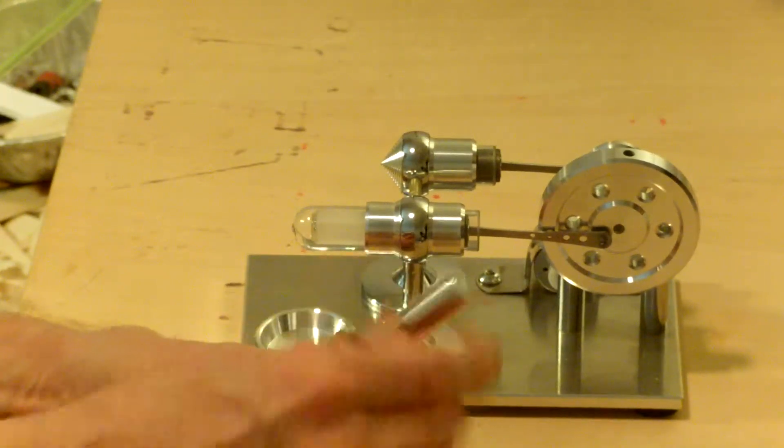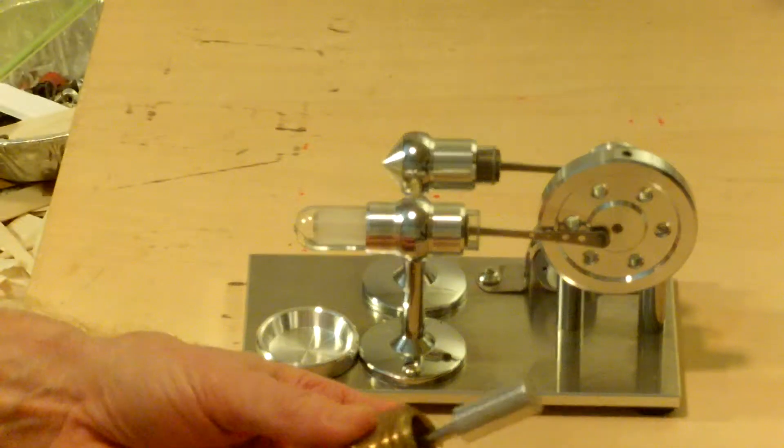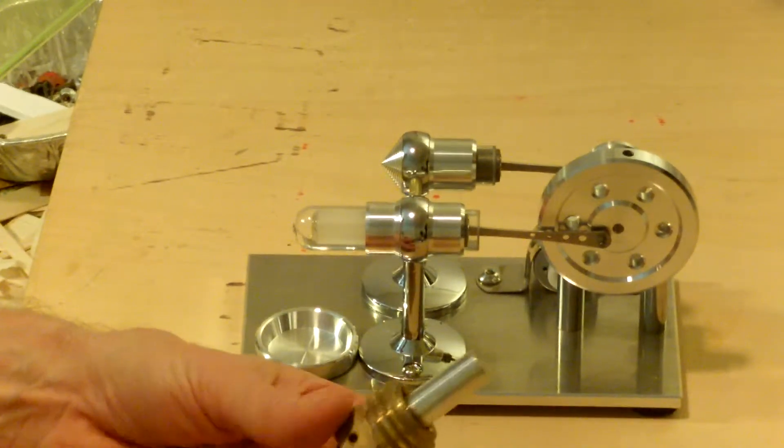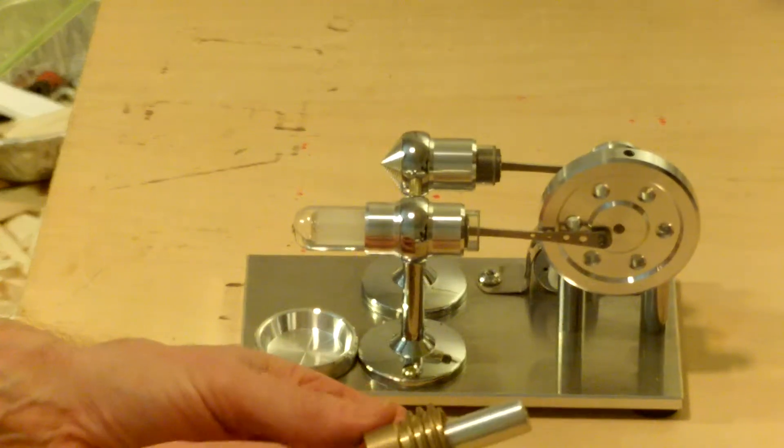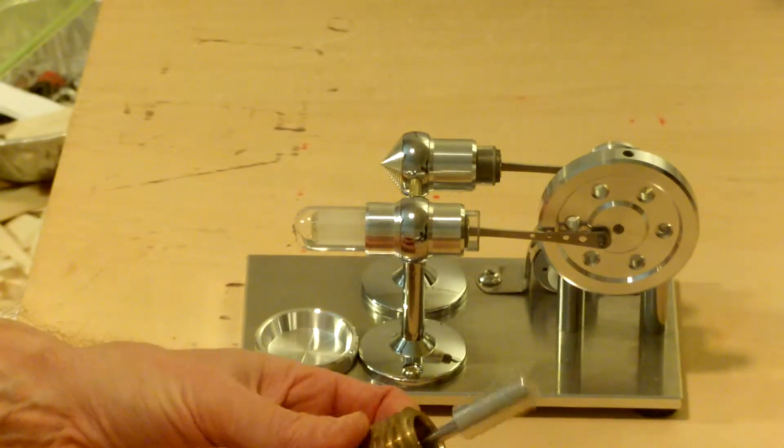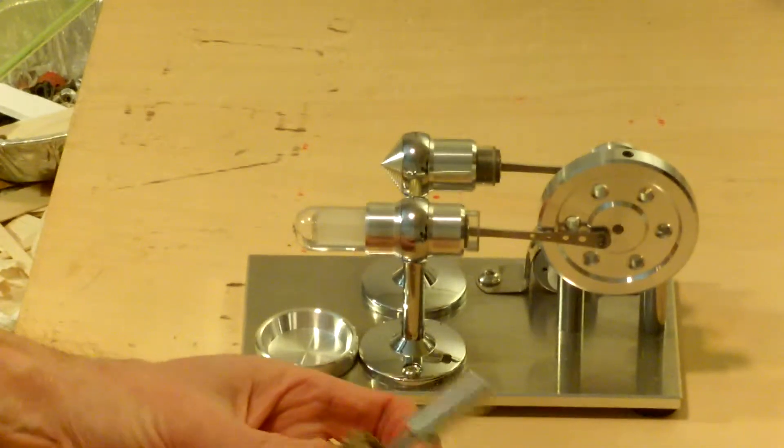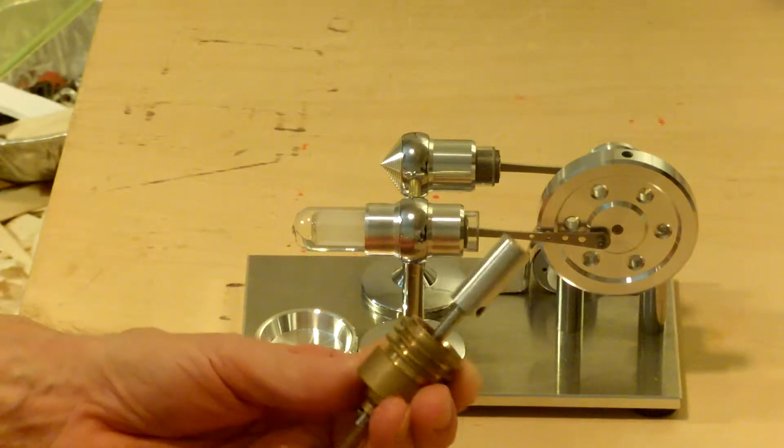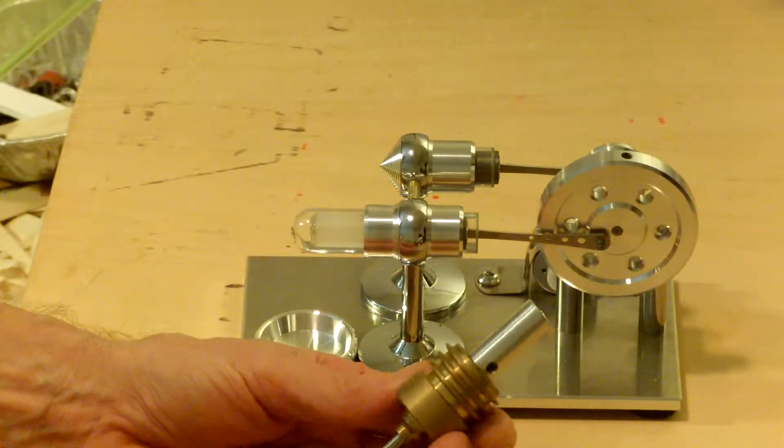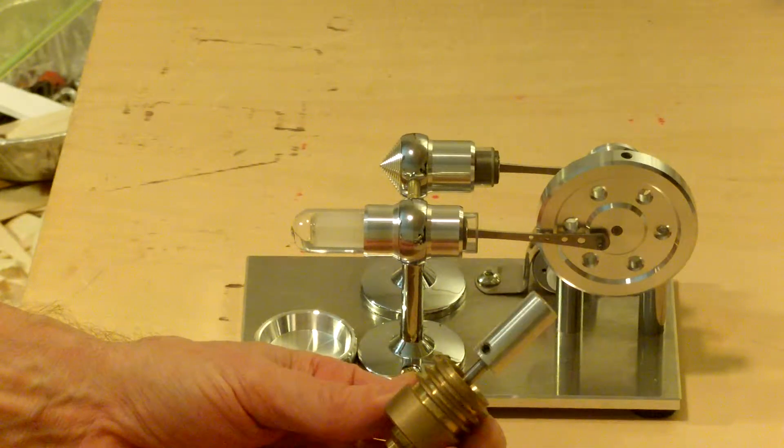The shaft it's on is more massive than the displacer. So if one wanted to, one could try to lighten the mass of the shaft.